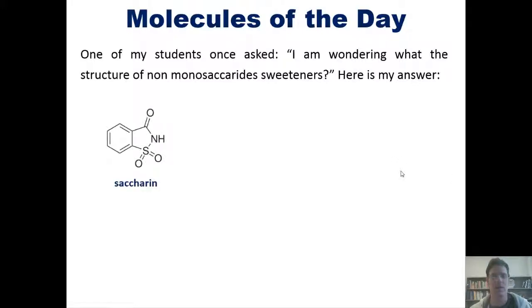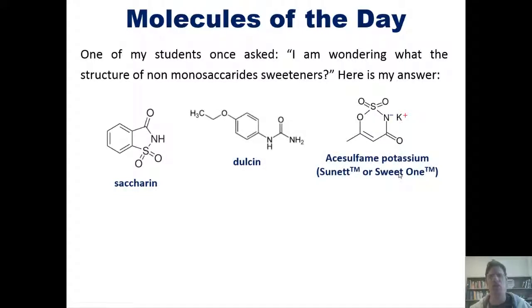So here is my answer for a few of them. These are the structures of saccharin, dulcene, acesulfame potassium, which is also known as sunnet or sweet one. I almost said sweat one. Sweat one, incidentally, would probably be a worse taste.